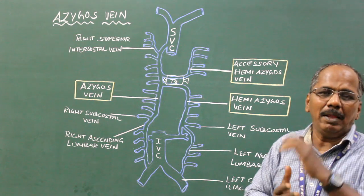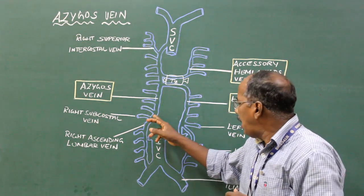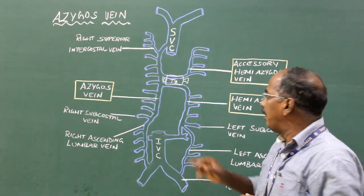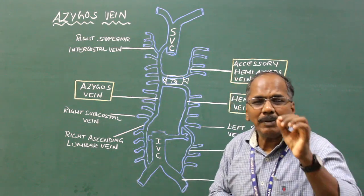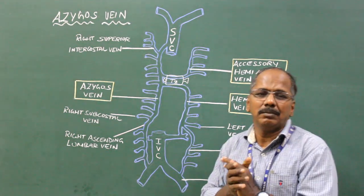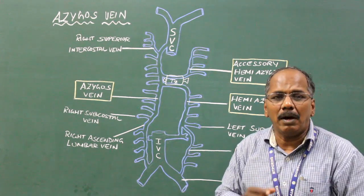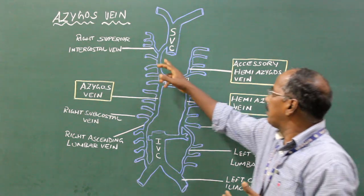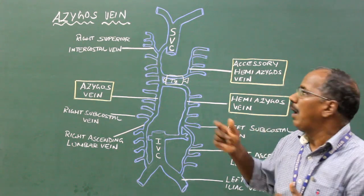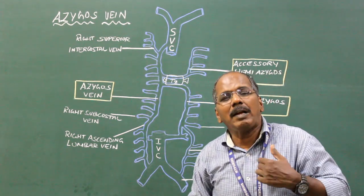Course and termination. The azygous vein, after formation, ascends up and leaves the abdomen by passing through the aortic opening of the diaphragm and enters the posterior mediastinum. In the posterior mediastinum it ascends up to the level of T4 vertebra, where it drains into the superior vena cava at the level of the 2nd costal cartilage.